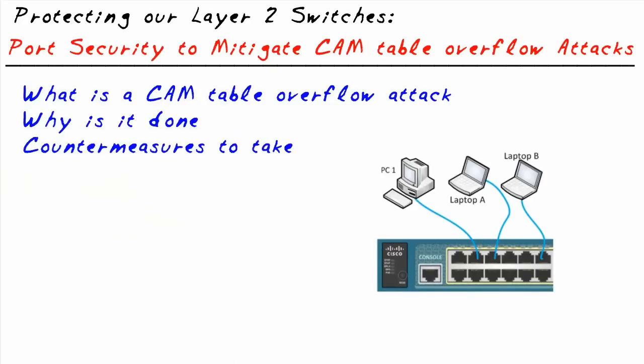A cam table overflow attack is where you send more MAC addresses than the switch can remember. As a result, the switch doesn't know where valid hosts live and starts flooding to all other ports for the purpose of eavesdropping — that's primarily why it's done. Another side effect is that your switch may crash if it doesn't handle it well, which would constitute a denial of service attack.